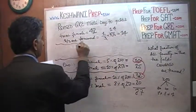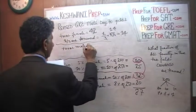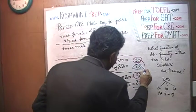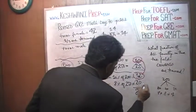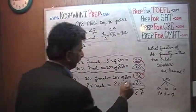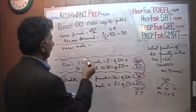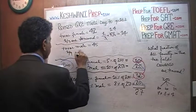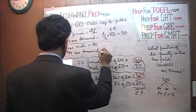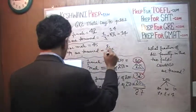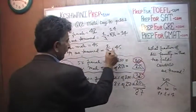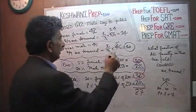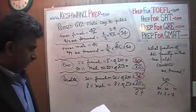Now let's do the male faculty. Total male faculty: 25 in biological sciences plus 20 in health sciences equals 45 male faculty. We are told that two ninths of them are tenured. Two ninths of 45: 45 contains five ninths, so two times 5 is 10. So 10 male faculty are tenured and 14 female faculty are tenured. We are almost there.